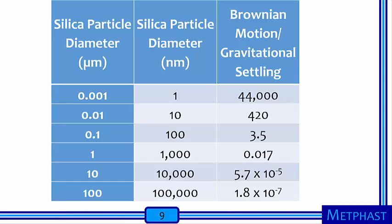If you complete the ratios for the rest of the silica particle diameters in this table, you can see that when the ratio is greater than 1, Brownian motion dominates, and when the ratio is less than 1, gravitational settling dominates.